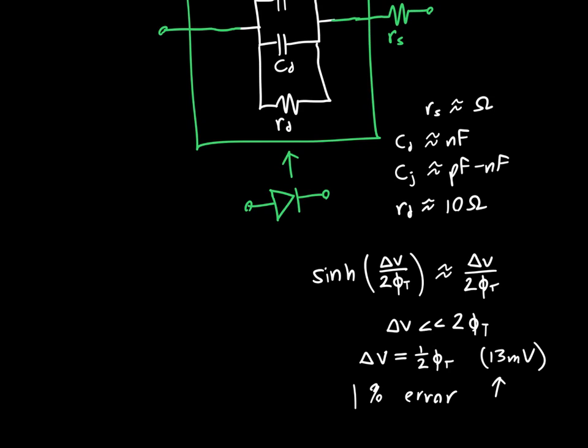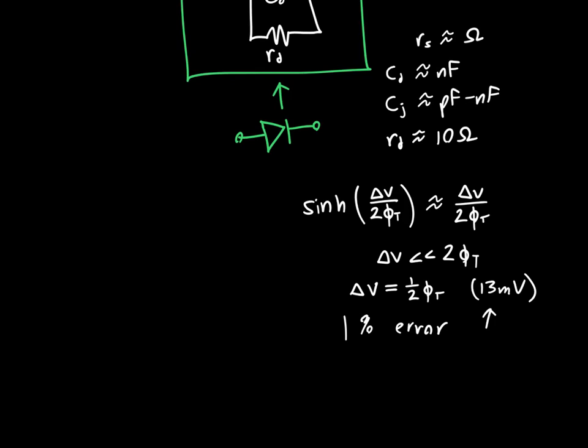then you always have to keep in mind that our error is going to get larger, potentially very large. So for delta V is equal to about 100 millivolts, we'll get 50 percent error with this approximation.